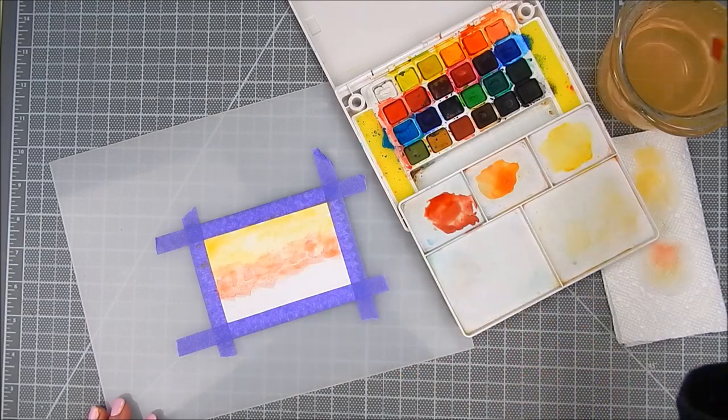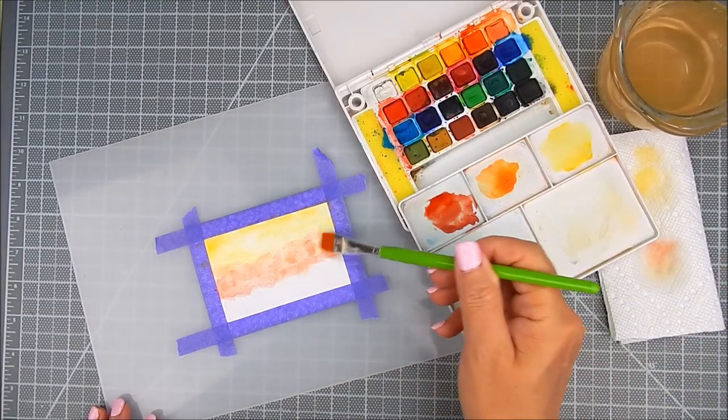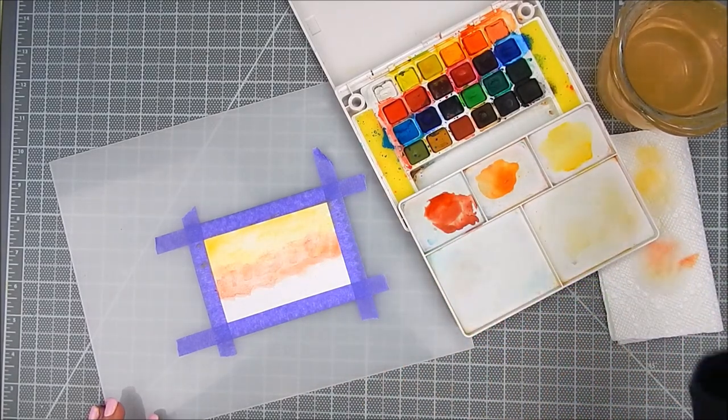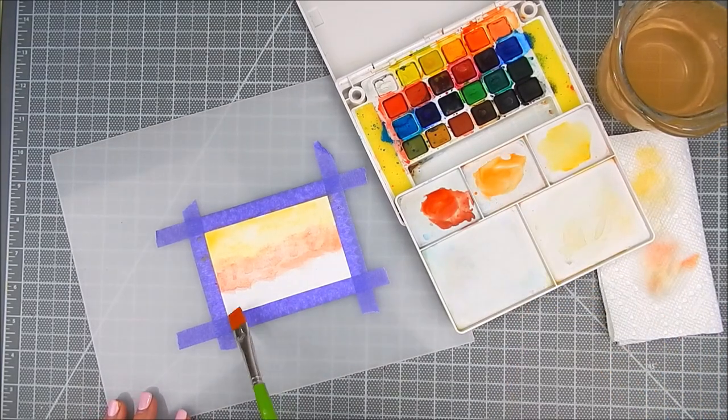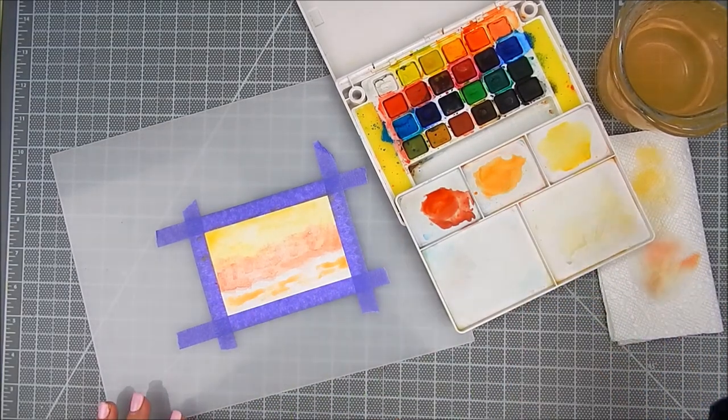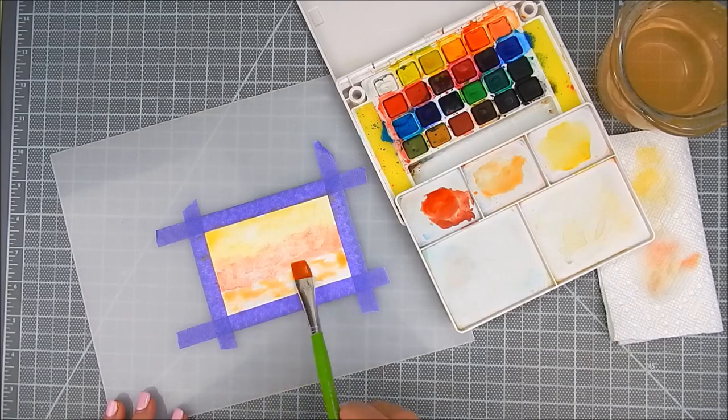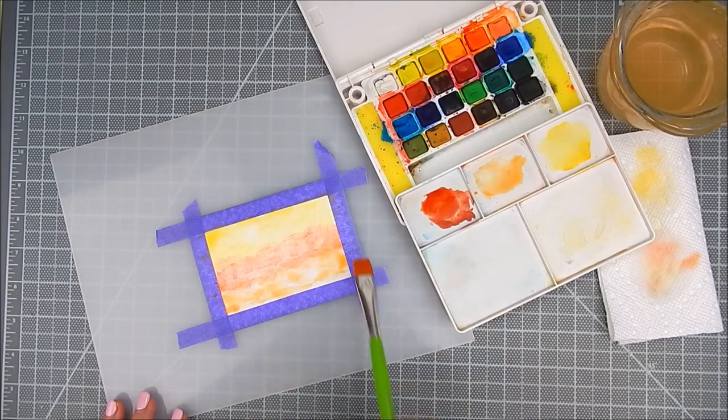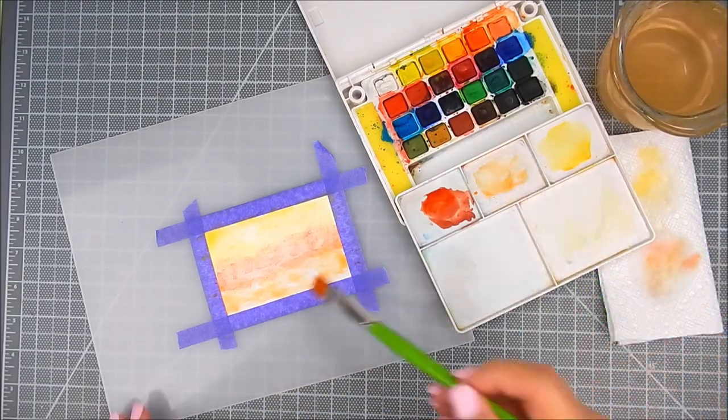Then I add a rust color and I'm coming in with a lighter orange, tapping and adding that and letting it blend where the colors meet. If you have a blot, you can use a paper towel to blot any excess water.